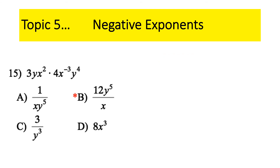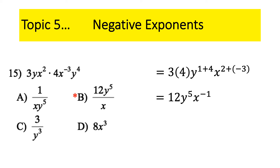Topic five: negative exponents. The rule for multiplying with exponents is you add the exponents; power to a power, you multiply; division, you subtract. For this problem, multiply the coefficients — 3 times 4 — then add exponents for x's and y's. y is first power plus fourth power = y⁵; x is second power plus negative 3 = x⁻¹. 3 times 4 is 12. Negative exponents in the numerator move to the denominator and become positive — done.